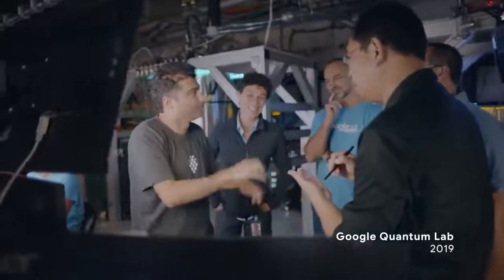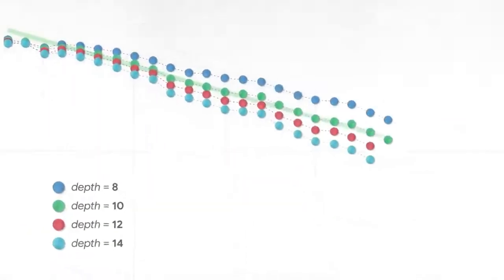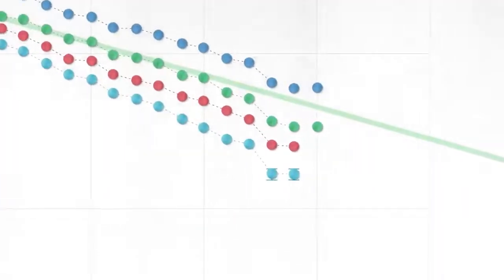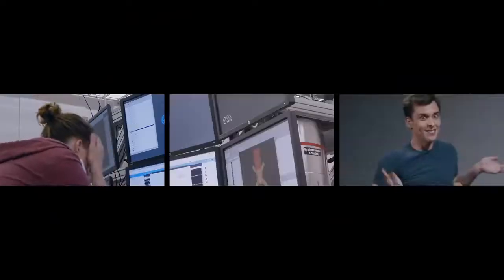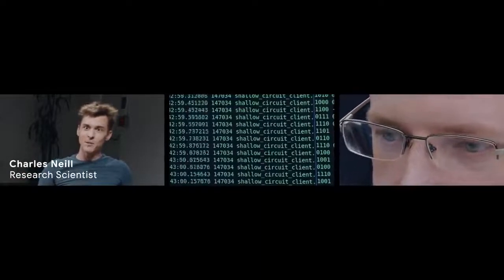When the experiment started we were getting data from the experimentalists. We saw initially a beautiful straight line corresponding to our predictions. Then right before we hit supremacy the results dropped much faster and fell below the threshold where it needed to be. There was nothing we could do because we didn't know how to analyze past that. Everyone was like, oh we're screwed, because it's just getting really, really bad at large numbers of qubits.